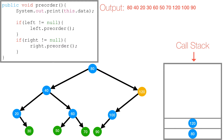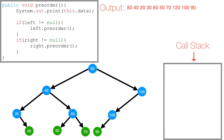We haven't explored 100's right subtree, so we check if it's not null — it is null — so 100 gets popped off the call stack. We're back at 120. We've explored 120's left subtree containing 90 and 100, but 120's right is also null. So 120 gets popped off the call stack and we're back at 80. We've now explored both of 80's subtrees, so we're done with this entire tree, and 80 gets popped off the call stack.